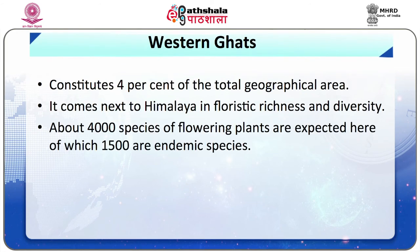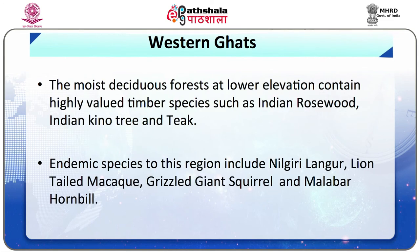Fifth, the Western Ghats. This region constitutes 4% of the total geographical area. The Western Ghats biogeographic zone comes next to the Himalaya in floristic richness and diversity. About 4,000 species of flowering plants are expected here, of which 1,500 are endemic. The moist deciduous forests at lower elevation contain highly valued timber species such as Indian rosewood, Indian quino tree and teak. Significant endemic animal species include Nilgiri langur, Lion-tailed macaque, Grizzled giant squirrel, and Malabar grey hornbill.